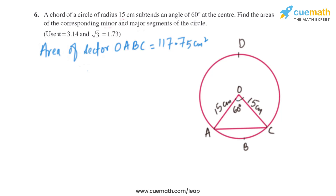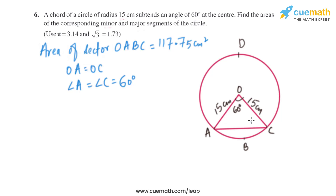To find the area of triangle OAC: OA and OC are both radii, so both sides are equal, meaning angle A equals angle C. Since the central angle is 60°, the sum of the other two angles is 120°, and as they are equal, angle A and angle C are each 60°. This means triangle OAC is an equilateral triangle.